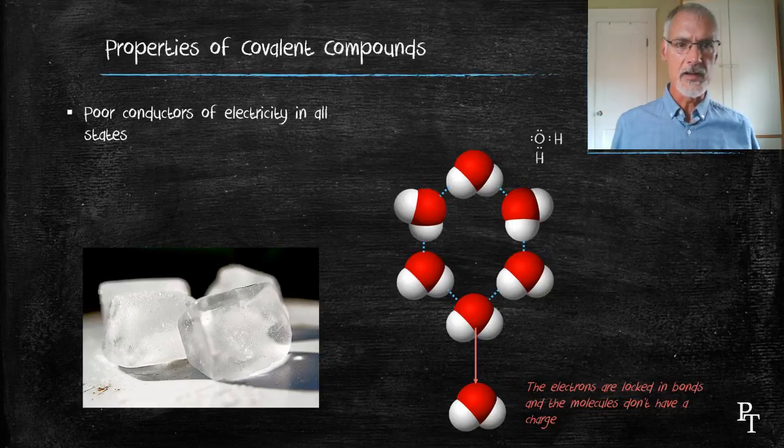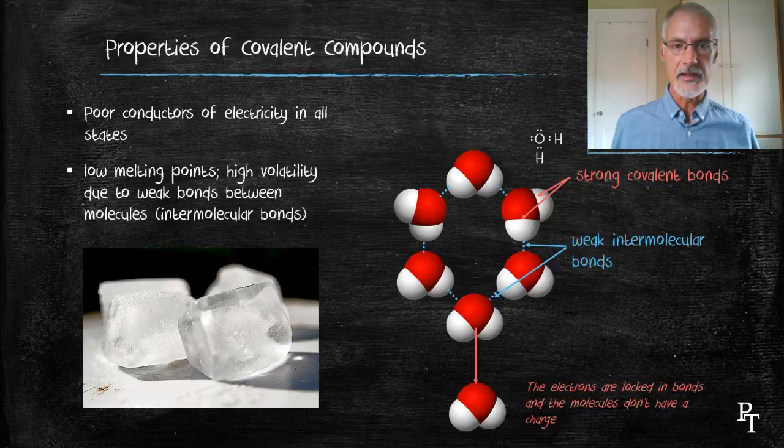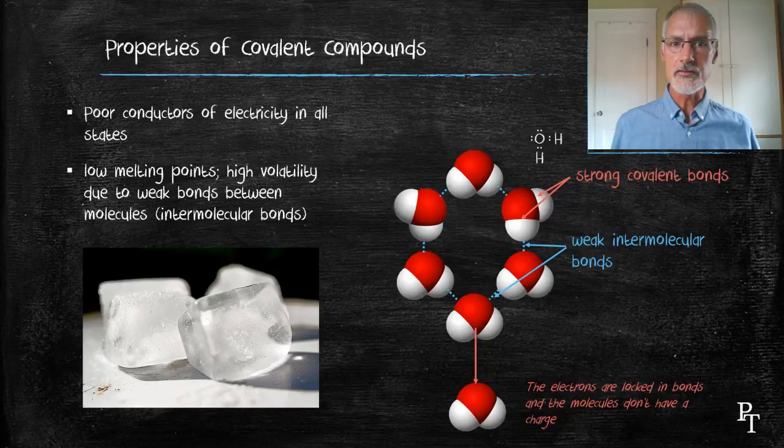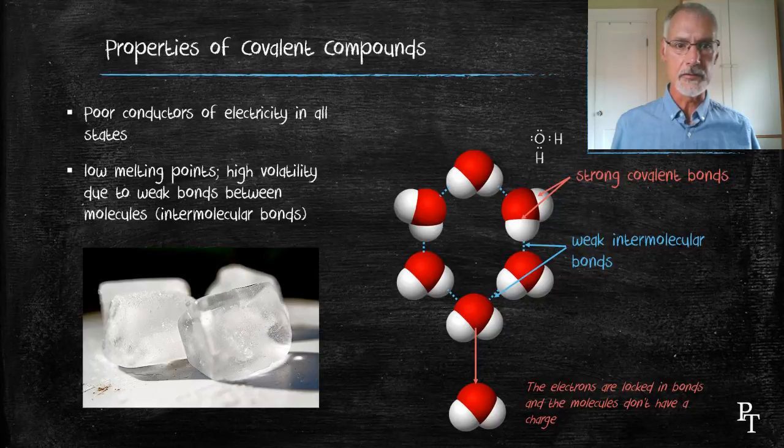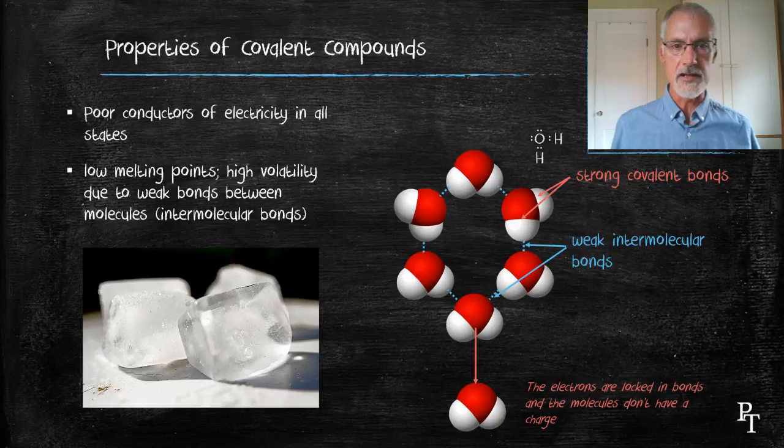All these substances, covalent compounds, tend to have low melting points. Now the reason that is, is there are weak bonds that exist between molecules, inter standing for between molecules. These weak bonds are easily broken. So in the case of ice, for instance, they break at zero degrees Celsius. It's important to note that you're not actually breaking a covalent bond. The covalent bond would require thousands of degrees to break. So when we melt covalent compounds, we're not actually breaking a covalent bond. We're breaking much weaker interbond, or intermolecular interactions. We'll find out more of these in a later program.